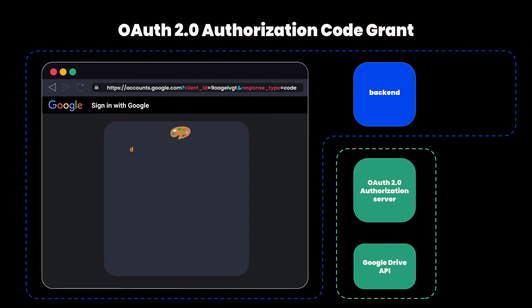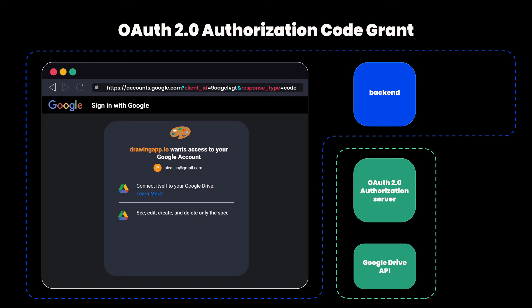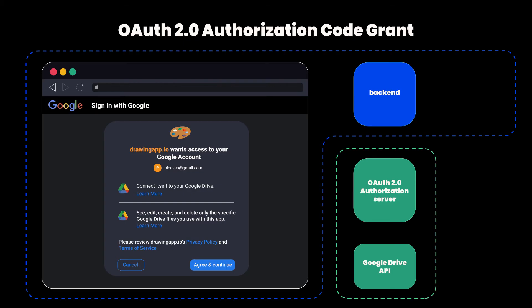After the user has authenticated and the Google authorization server knows his identity, it shows a screen you have probably already seen thousands of times: 'This app would like to access your Google account' and is asking for a couple of permissions — in our case, Google Drive permissions. The logo, app description, and everything we see on this page is exactly what we entered when we registered the application. The permissions are the scopes that you configured during registration. You can also add scopes as query parameters when you redirect if you don't want to use the default scopes you specified at registration.